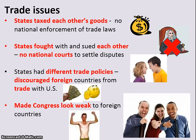Then let's look at trade issues. First, the states put taxes on each other's goods. The Articles really treated these almost like 13 little mini countries, and they sometimes behaved like this, particularly in trade. There was no national enforcement of trade laws, and when states had disputes over trade, there was no national court to settle those disputes. Also, the states had different trade policies toward foreign countries, so a foreign country doing business with the United States had the rules changed depending on which state they were trading with. All of this made Congress look weak to foreign countries and gave them a lack of respect and confidence in the new American government.